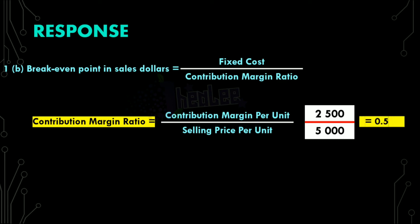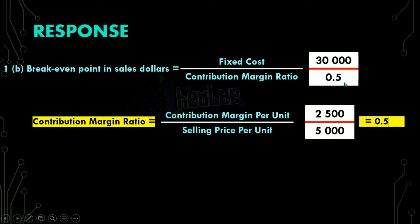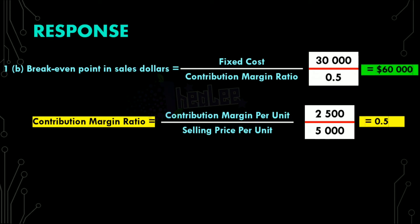Remember, if you want to put this in percentage, all you have to do is multiply by 100. Now that we have our contribution margin ratio, let us calculate our break-even point in sales dollars. The fixed cost is $30,000 divided by the contribution margin ratio of 0.5, and that gives us a result of $60,000. So our break-even point in sales dollars is $60,000.